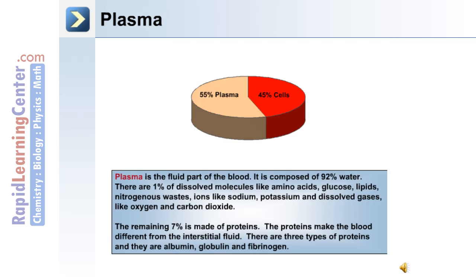The fluid part of whole blood is known as plasma. It's composed of 92% water. There is 1% of dissolved molecules such as amino acids, glucose, and lipids, as well as gases such as oxygen and carbon dioxide. The remaining 7% is made up of proteins. These proteins make the blood different from the surrounding interstitial fluid.